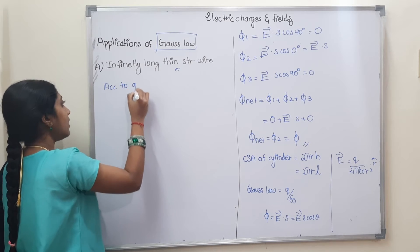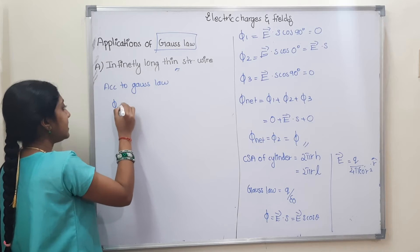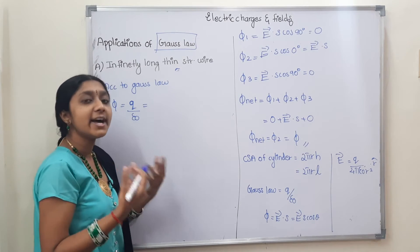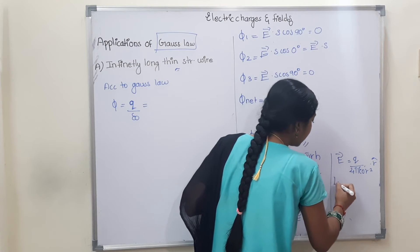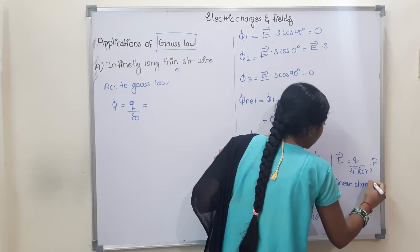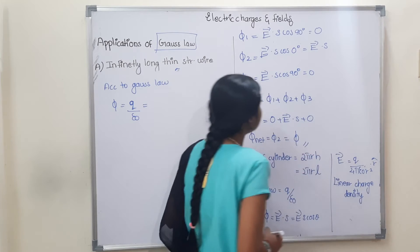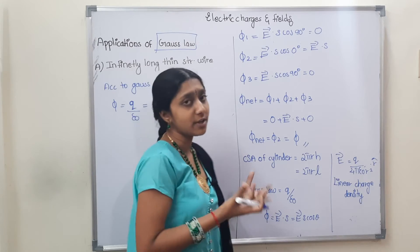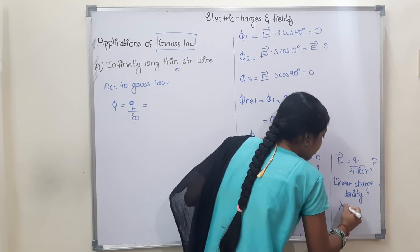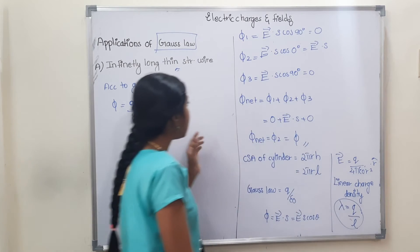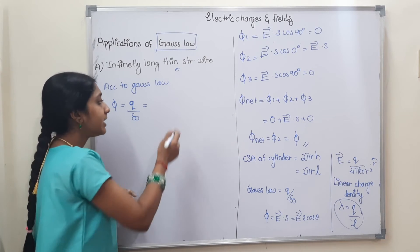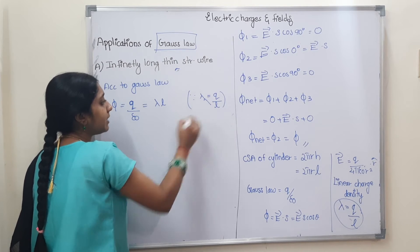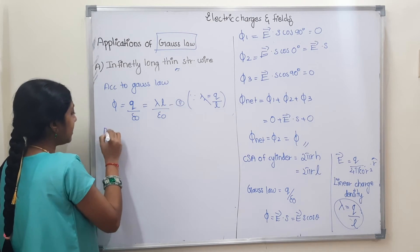According to Gauss's law, Φ = Q / ε₀. To find Q, we use linear charge density. For a thin straight wire, the linear charge density lambda (λ) = Q / L, so Q = λL. Substituting, Q / ε₀ = λL / ε₀.